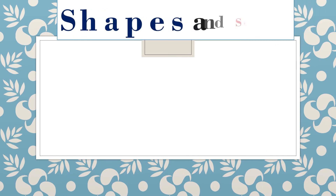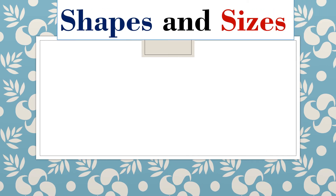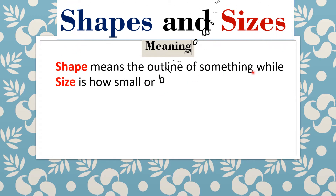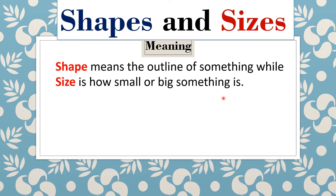Shapes and sizes. Let's firstly begin with the meaning of these two words. Shape means the outline of something — it is simply the visual form of something or somebody. Size is how small or big something is — that is, how big or small something is.